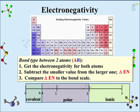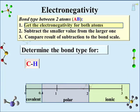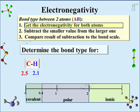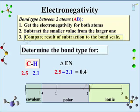Let's practice determining bond type, beginning with carbon-hydrogen. Referring to the Pauling scale, carbon has an electronegativity of 2.5 and hydrogen is 2.1. We subtract the smaller value, 2.1, from the larger, 2.5, giving a difference of 0.4. Taking this to the bond scale, it falls into the covalent section — not by much, but a covalent bond nevertheless.